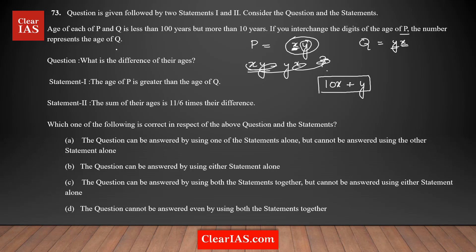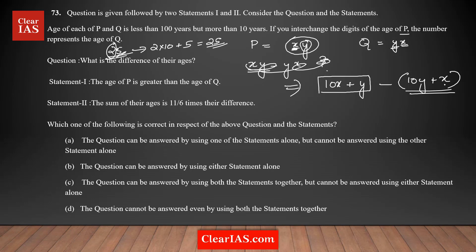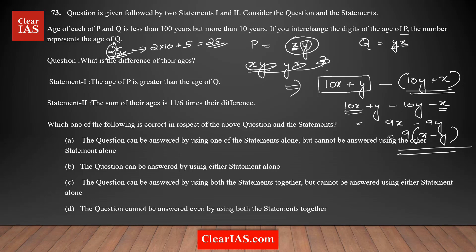For example, 25 is represented as 2×10 + 5. So P = 10x + y, and Q = 10y + x. The difference is (10x + y) − (10y + x), which simplifies by opening the bracket to 10x + y − 10y − x. Combining like terms: 10x − x = 9x and y − 10y = −9y, giving 9x − 9y, or 9(x − y).